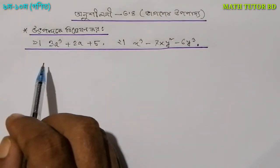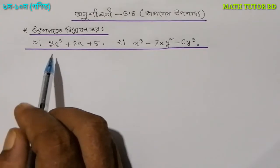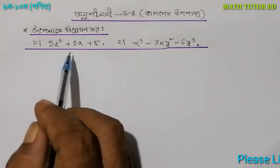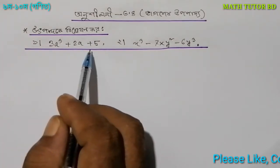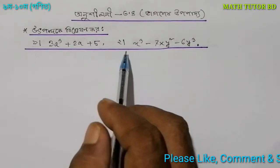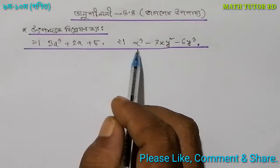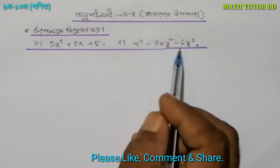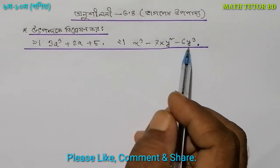Number 1 is 3a³ plus 2a plus 5. Number 2 is x³ minus 7xy² minus 6y³.